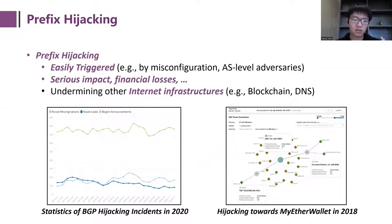Prefix hijacking attacks are easily triggered by misconfigurations or AS-level adversaries, cause serious impact, and may undermine other internet infrastructures like blockchains and DNS servers. This feature makes prefix hijacking accidents continuously arise in recent years, and as a result, addressing prefix hijacking becomes a great concern of researchers and network operators.